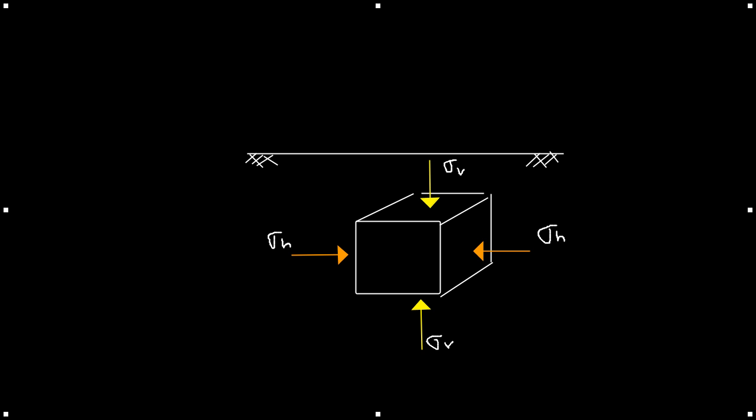Let's go back now and look at our 3D particle that we drew earlier. We're going to ignore sigma-y because we're not interested in its value. We're just going to look at sigma-v and sigma-h only. Now, sigma-v and sigma-h, when we're looking at the effective values of each of these stresses, they're related by something known as the coefficient of lateral earth pressure, which is denoted by k.